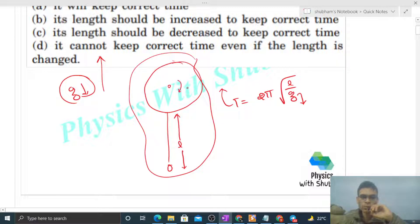Then if we want to keep this time period the same, the time period depends on the l/g ratio. So if the value of g is decreasing, we can decrease the value of l as well in such a way...